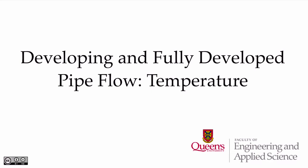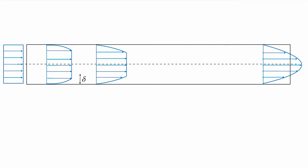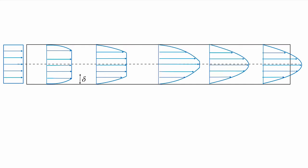In this video, we're going to look at the temperature profiles in developing and fully developed pipe flow. Consider a plug flow entering a pipe. As the flow enters the pipe, the no-slip condition at the wall means that we have a region where the velocity is increasing from zero up to a value greater than the inlet value in order to conserve mass. As the flow continues down the pipe, that region will grow and the centerline velocity will increase until ultimately we reach a fully developed condition where the profile is no longer changing with distance along the pipe.